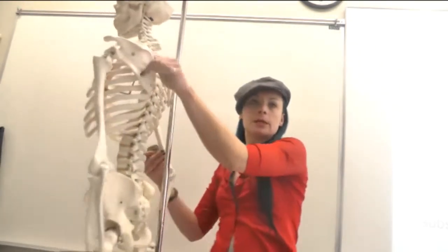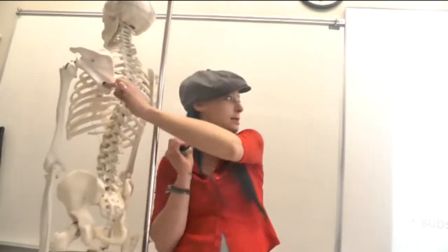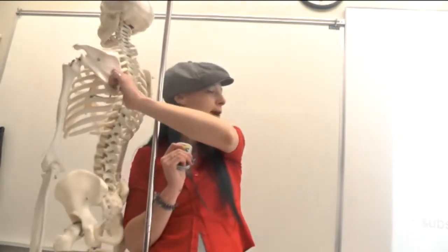Infraspinatus is below the spine of the scapula. So infraspinatus sits here, and it rotates and adducts the arm.